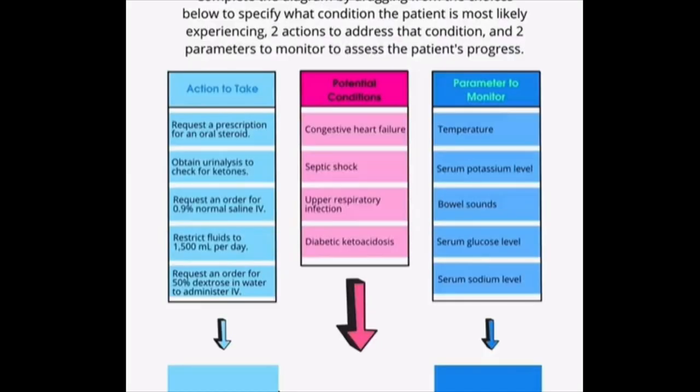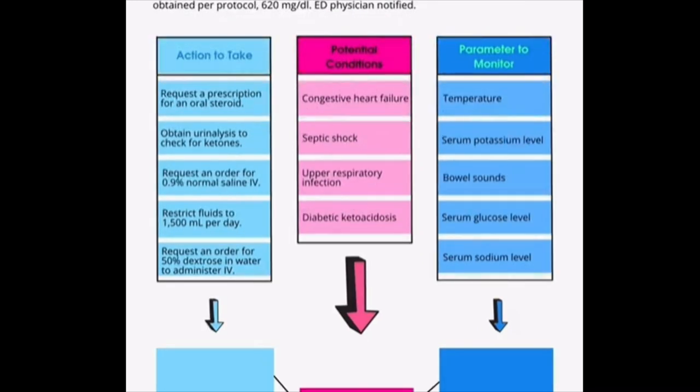We're going to complete the diagram by dragging the choices below to specify which condition the patient is most likely experiencing, two actions we're going to take to address this condition, and two parameters to monitor the patient's progress. I'm going to pull up the nurse's notes so we have everything on one screen. The first step to answering a bowtie question is reading the scenario and figuring out the potential condition the patient possibly has.